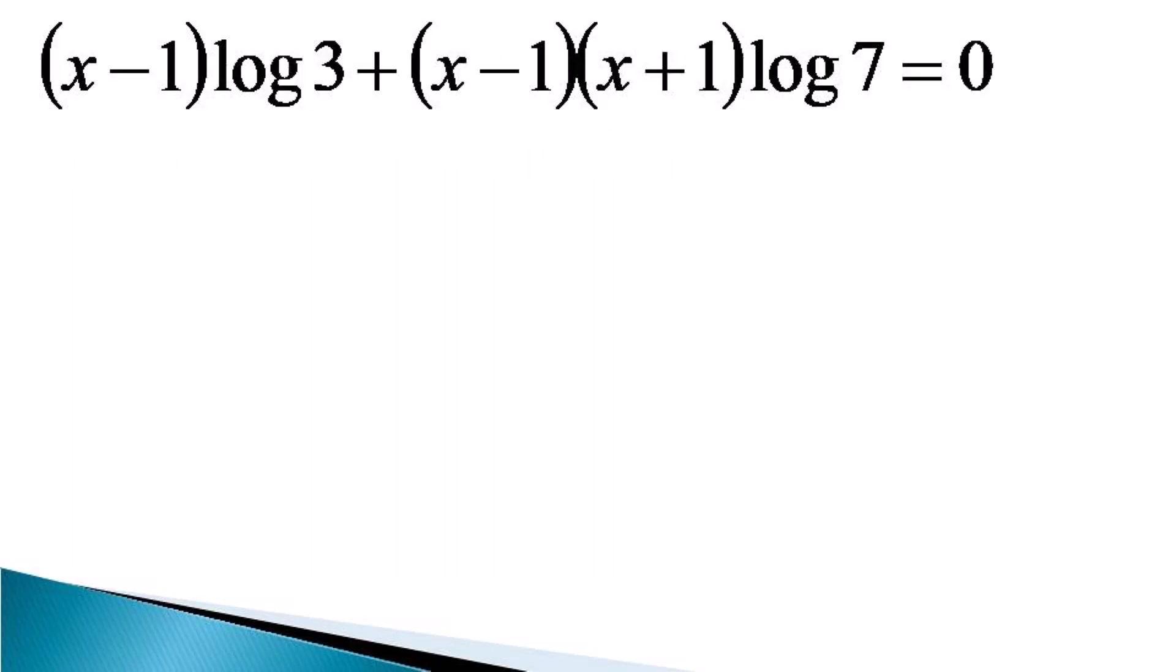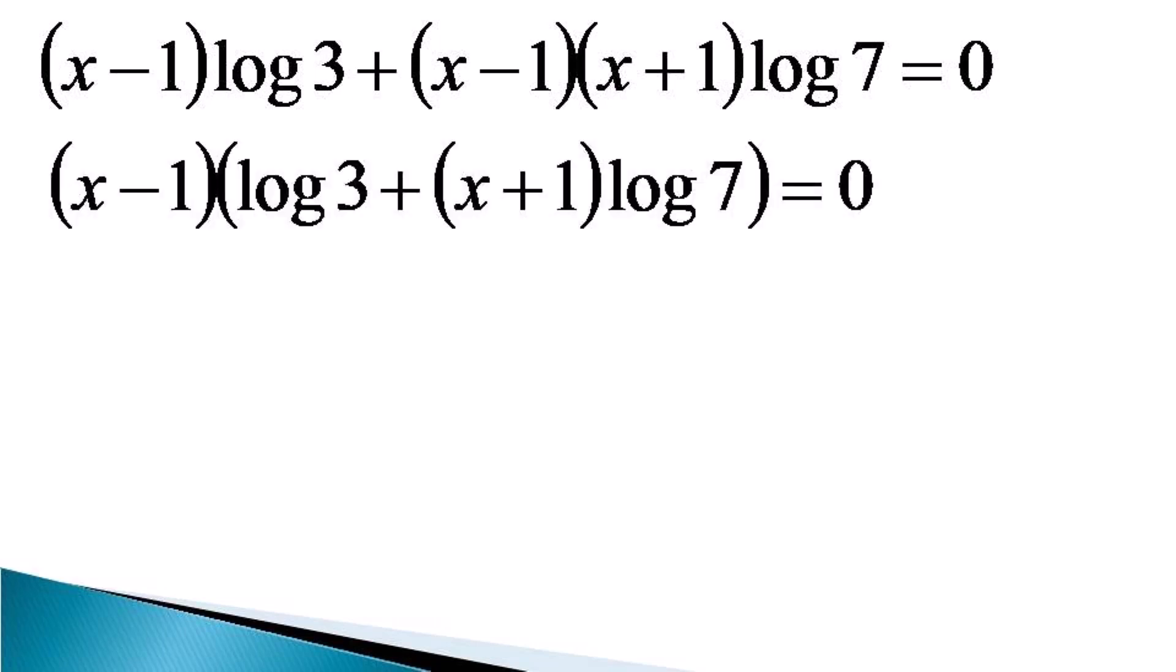Now in this equivalent equation we take x minus 1 common throughout which makes it as x minus 1 into log 3 plus x plus 1 into log 7 is equal to 0. Now the multiplication of these two terms gives two solutions of the x.